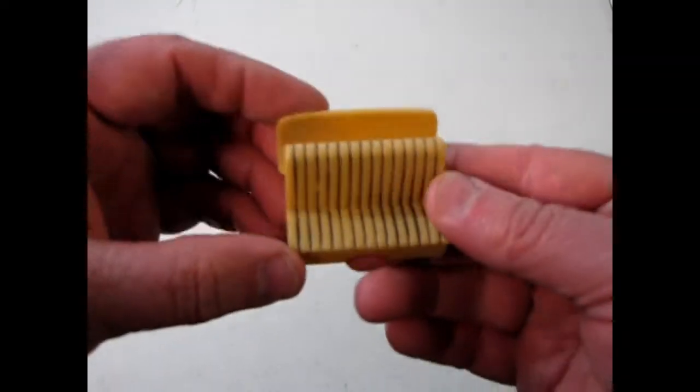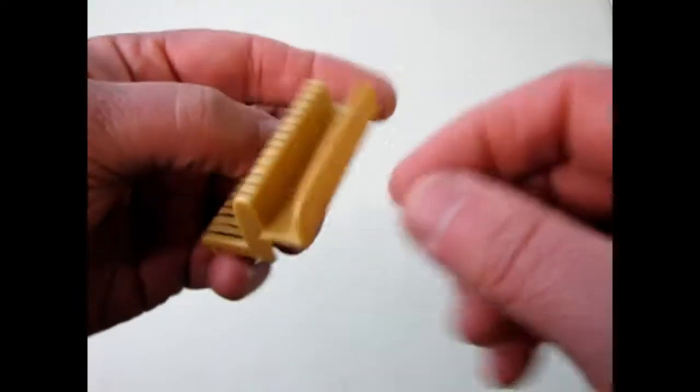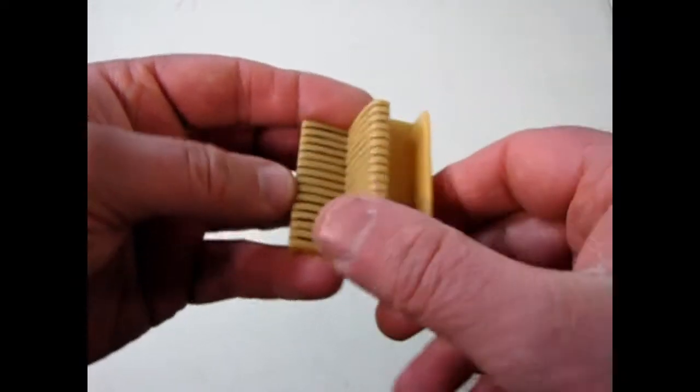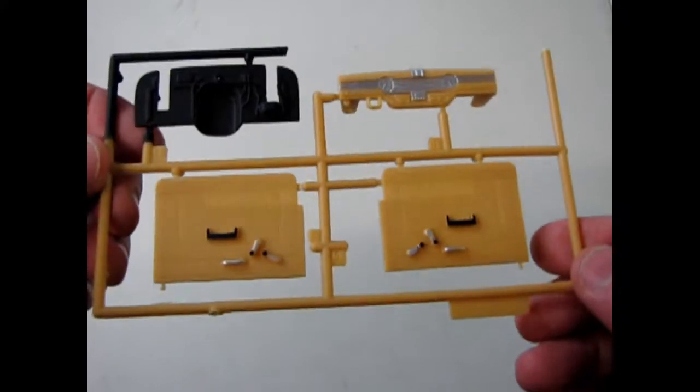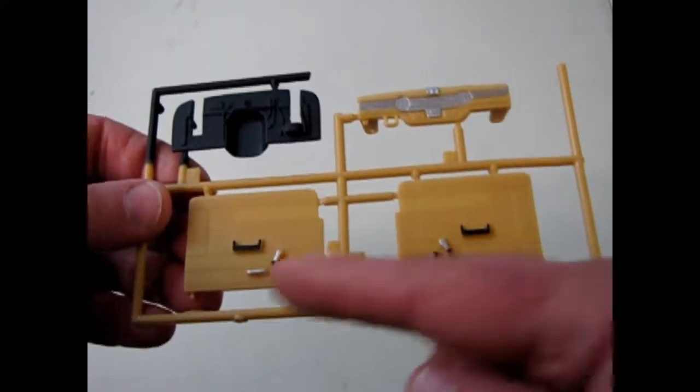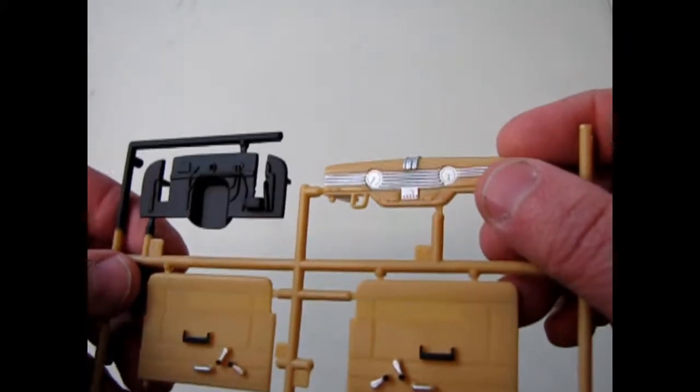Here's the back seat with a little package shelf before they go to the rear window. And then they've pre-painted the inner door panels with all the detail. That nice dashboard there.